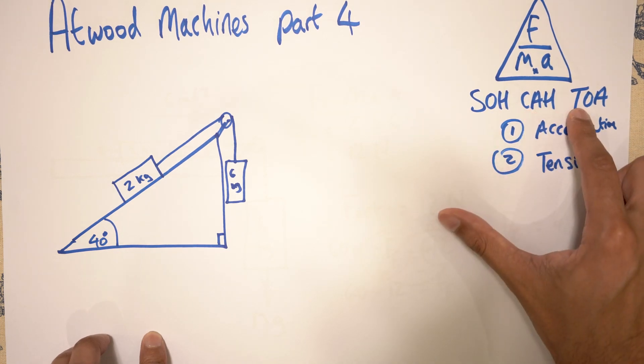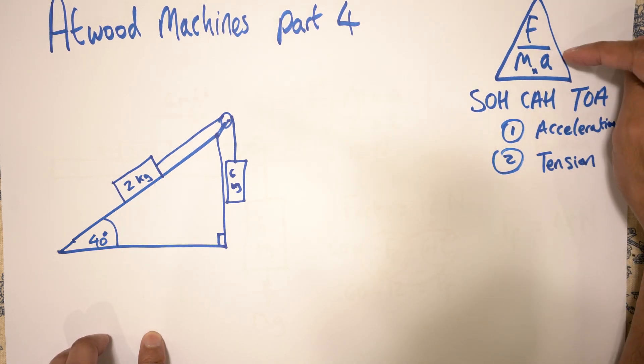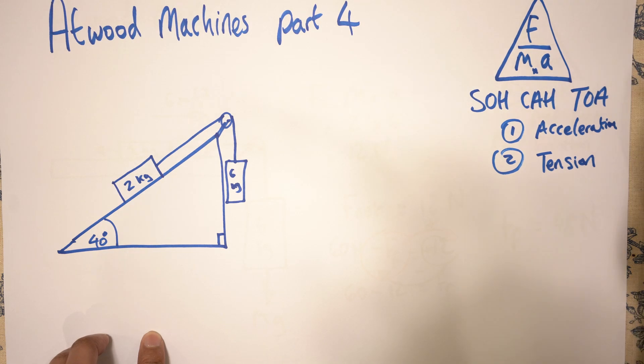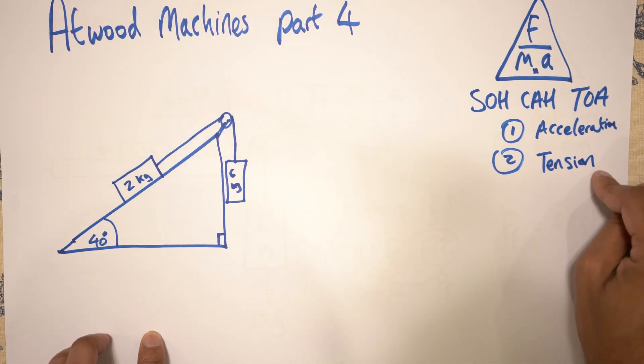So that's sine, cosine, tangent, and of course we need F equals MA. Just like in the previous ones, we want to work out the acceleration and the tension in the string.